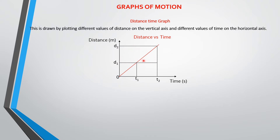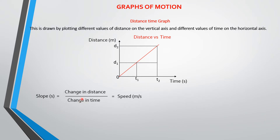What you get from this particular graph is the slope. Speed is distance over time, so if you take the values of distance over time you get speed. This means the slope of this graph is equal to the speed. If they give you a graph like this and ask you to find the speed, you just find the slope. The slope equals change in distance over change in time, which equals speed.